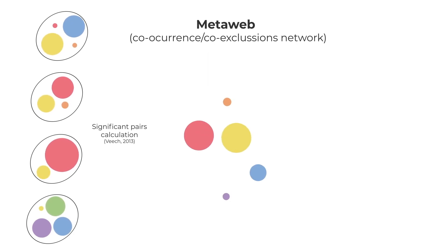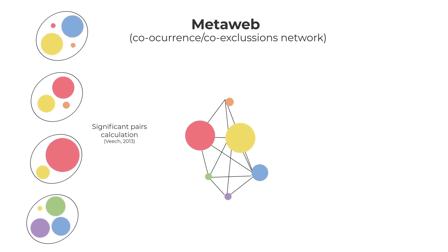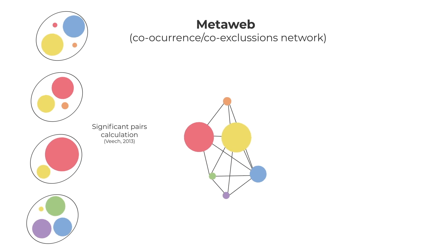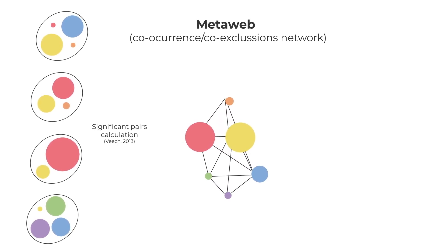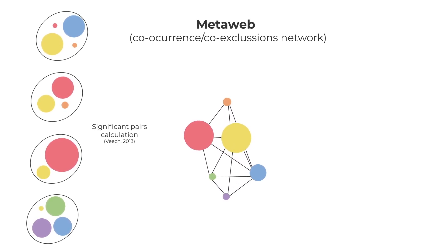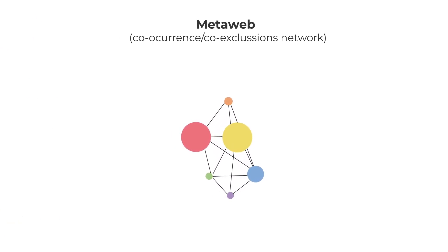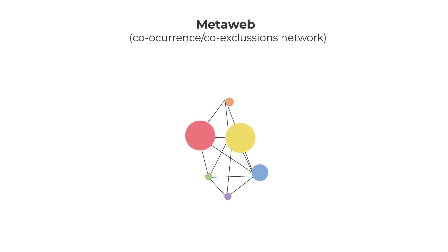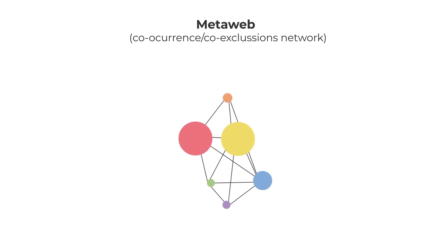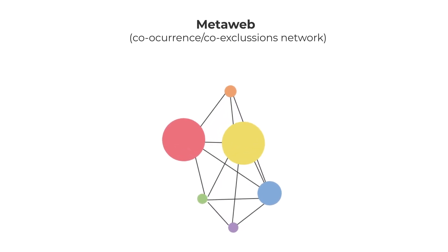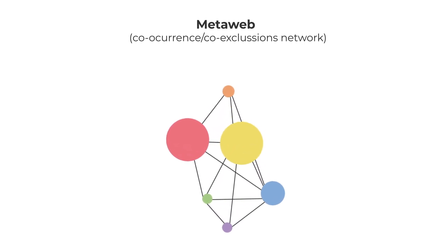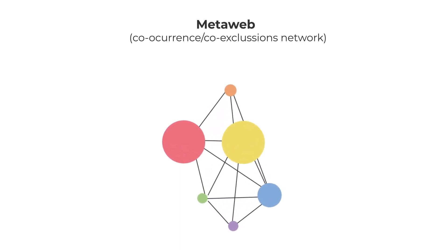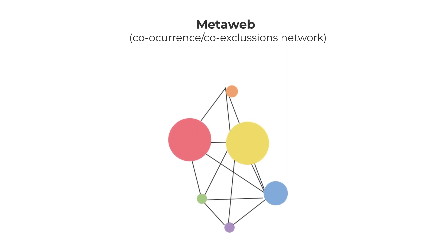This was used to build a network, also called MetaWeb, where nodes represent a microbial taxon, and edges connecting them represent statistically significant co-occurrence or co-exclusions.